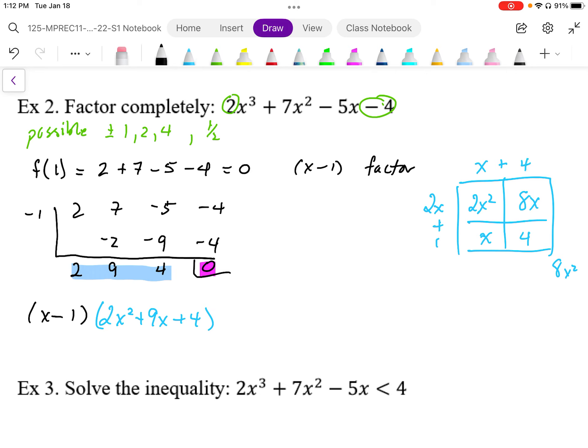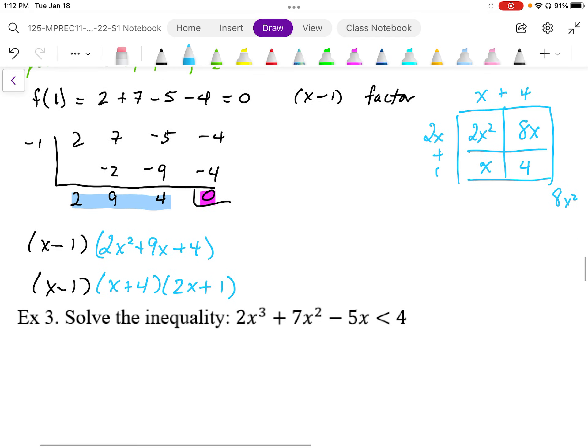So factoring this fully, then, we end up with x minus 1 and then x plus 4 times 2x plus 1. That's our fully factored form.